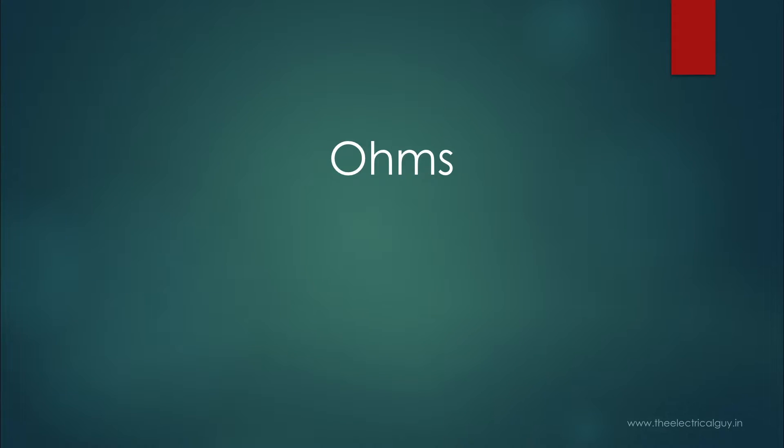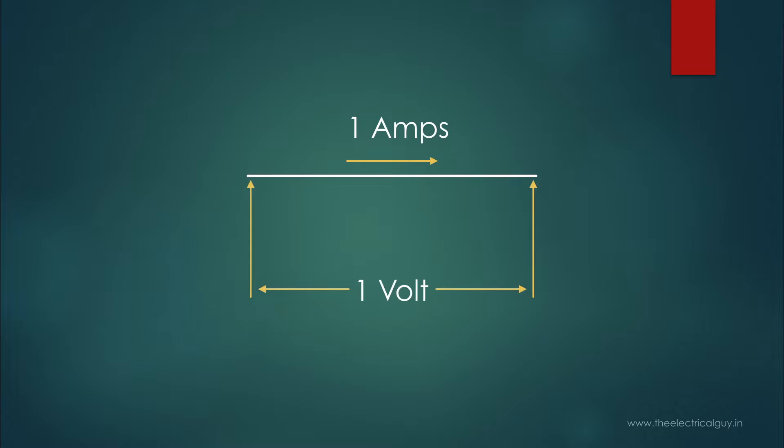Unit of resistance is ohm and it is denoted by this symbol. If we apply potential difference of 1V across this wire and if 1A current flows through it, then we can say this wire has a resistance of 1 ohm. Simple.